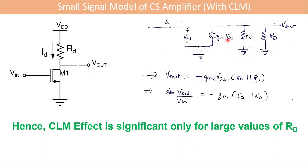With CLM, the voltage gain becomes minus GM times (RO parallel with RD). The output resistance of an ideal MOSFET is infinite, so the CLM effect is significant only for large values of RD.